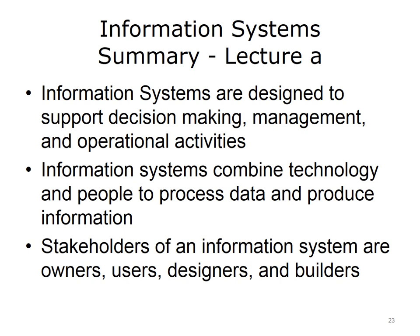This concludes Lecture A of Information Systems. Information systems are a combination of technology, people, and processes working together to produce and use information. Information systems provide access to information, which in turn helps improve processes and aids in decision-making. They also provide a way for people to communicate and collaborate. There are many different types of information systems used in businesses and institutions, including transaction processing systems and management information systems. Information system components include hardware, software, databases, networks, processes, and people. The stakeholders of information systems include system owners, users, designers, builders, and analysts.